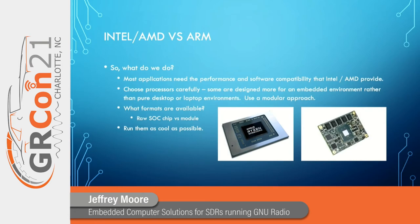Most applications need the performance and software compatibility that Intel and AMD provide. You have to choose the processors carefully. Intel has literally hundreds and hundreds of processors — it's mind boggling. Every year there are new ones, and every year there are new ones planned for the following year. They have this whole chain of processors always coming out, reflecting their consumer orientation toward desktop and laptop environments.